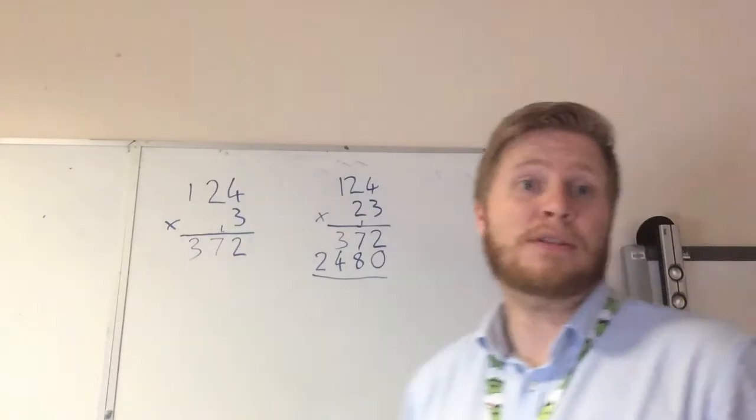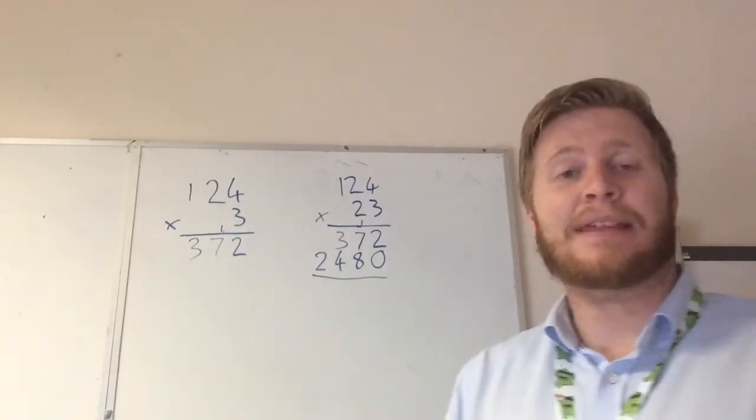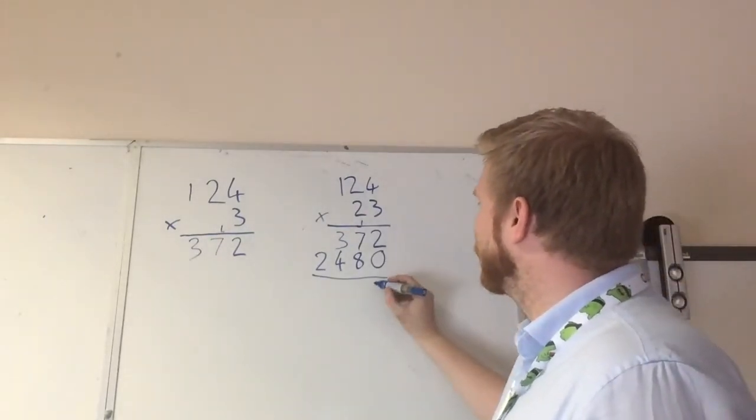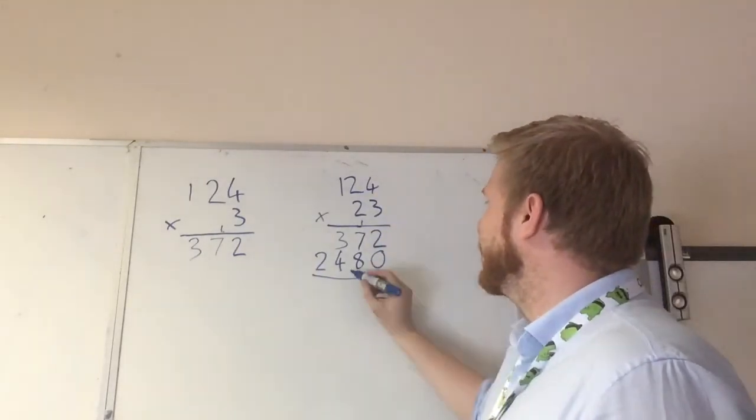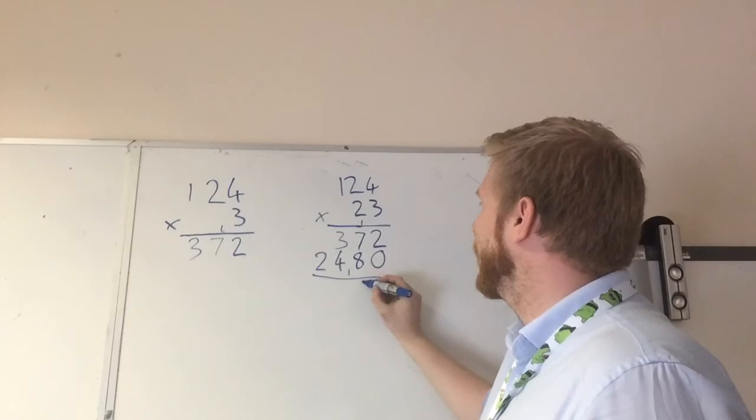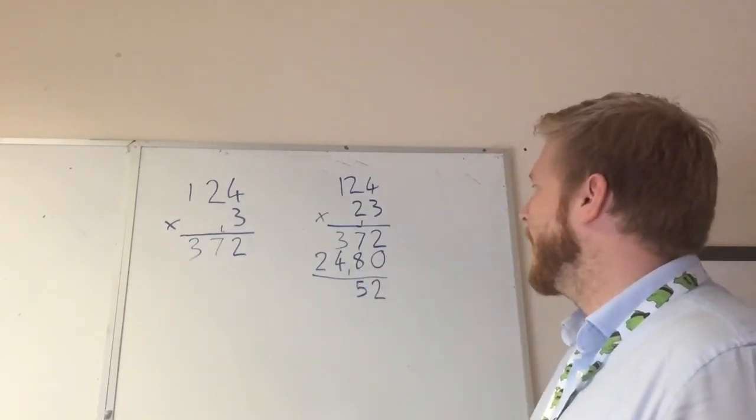Now we have our two numbers, and it's as simple as adding them together to find our answer. So 2 add 0 is 2. Then we've got 7 add 8, which is 15. So we put our 1 on the doorstep, and our 5 there.